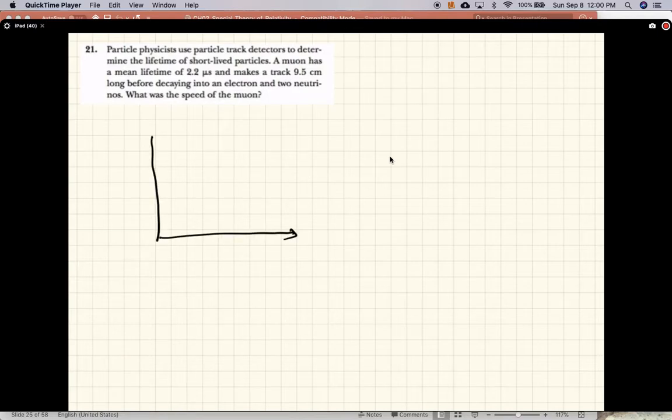These are lab coordinates, lab time. So here's the track of the muon. We'll say it's traveling in a straight line and it decays there. So this is capital T after which it decays.